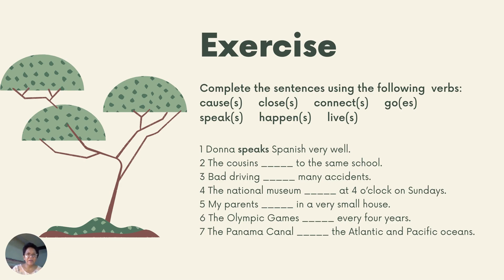Let's complete sentences using the correct verb forms. Number one: Donna speaks Spanish very well — 'speaks' because Donna is singular. Number two: The cousins go to the same school — 'go' with no es because the subject is plural. Number three: Bad driving causes many accidents — 'causes' because the subject 'bad driving' is singular, so the verb ends in s.